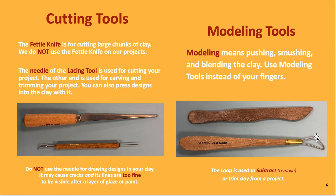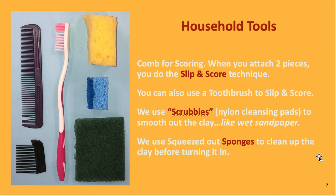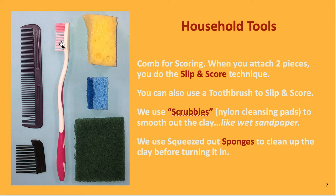This loop is used for subtracting or cutting away on clay. Make sure to slip and score where you add two pieces together. You're going to use the comb and scrubby or toothbrush for slipping and scoring. The water you put on the toothbrush or scrubby will create slip on the surface of your clay.